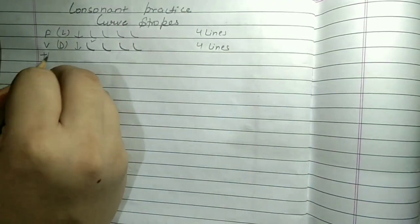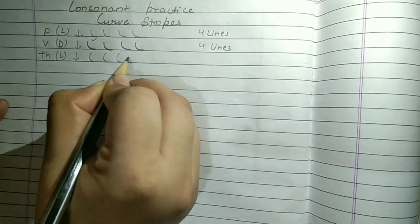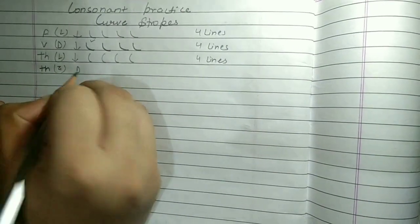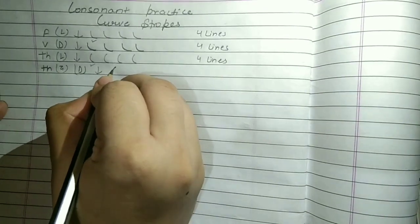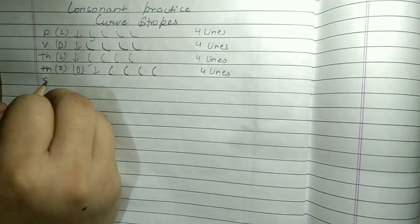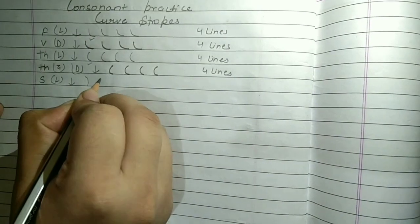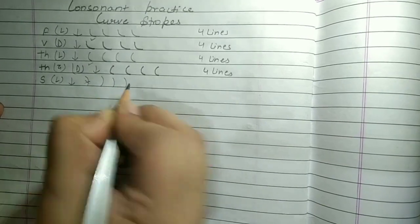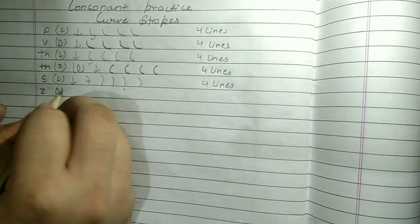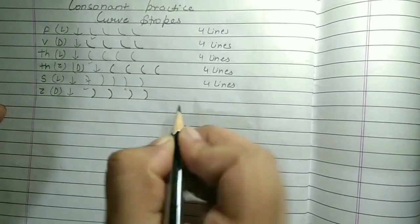Next consonant is TH light. TH is our light consonant, made in the downward direction. We will practice TH four lines. Then TH dark. This is our dark consonant, also called TH, made in the downward direction. We will practice four lines. Next is S, our light consonant. We will practice S. Then Z, our dark consonant. We will practice Z four lines.